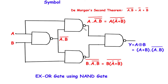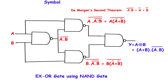In this NAND gate the output will be A into A dot B bar, whole complement. Now if we simplify this, this will be A in bracket A bar plus B bar, whole bar. This is according to De Morgan's second theorem, which states that A dot B bar is equal to A bar plus B bar. Here we can see we have replaced A dot B bar by A bar plus B bar.